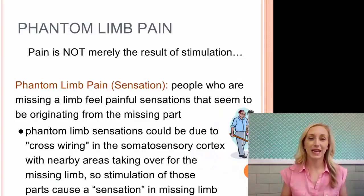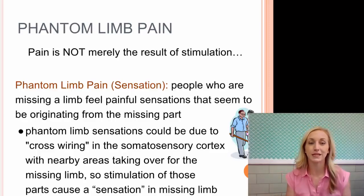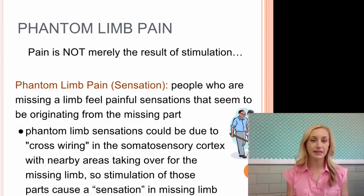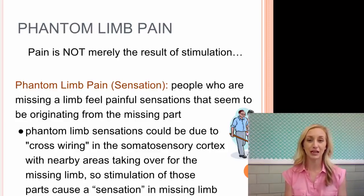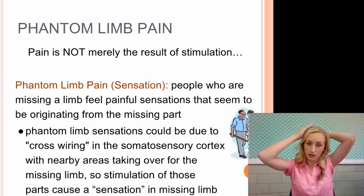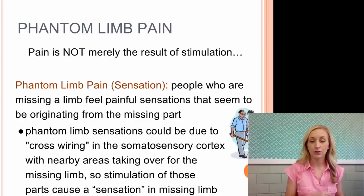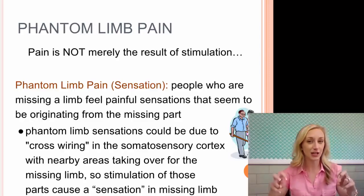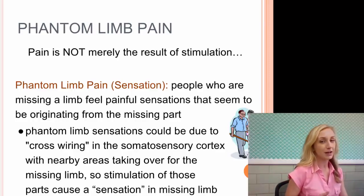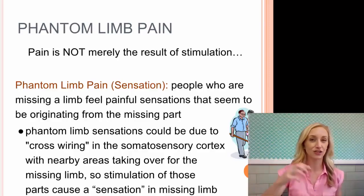Phantom limb pain is a sensation that is not merely the result of direct stimulation. People who are missing a limb from amputation feel painful sensations that seem to originate from the missing part. Phantom limb sensations may be due to cross-wiring in the somatosensory cortex, with nearby areas taking over for the missing limb. Stimulation of those areas causes a sensation in the missing limb — as if it's still there — because that part of the brain is still being activated.